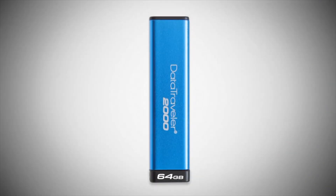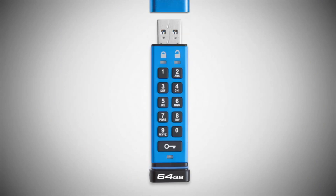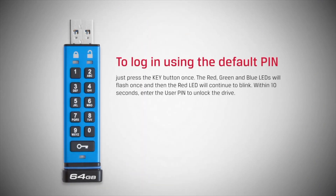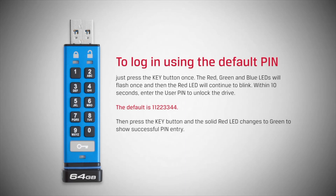Getting started with the DT2000 is easy. To log in using the default pin, just press the key button once. The red, green, and blue LEDs will flash once, and then the red LED will continue to blink. Within 10 seconds, enter the user pin to unlock the drive. The default pin is 1 1 2 2 3 3 4 4. Then press the key button and the solid red LED changes to green to show successful pin entry.